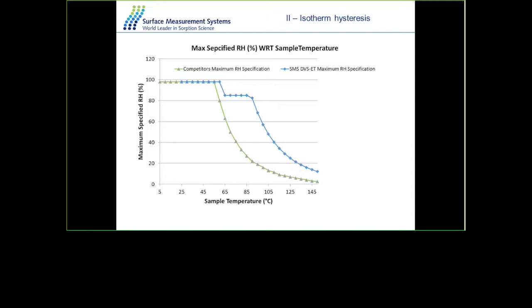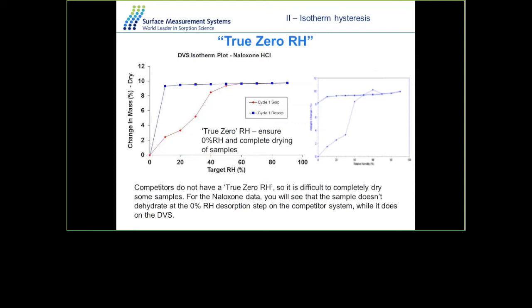Another advantage of the SMS product is the true zero RH capability. Using Naloxone HCl as an example, with a competitor system the desorption curve doesn't return to zero during the drying process, whereas with the SMS product the desorption curve returns to zero due to the true zero RH property of the system.